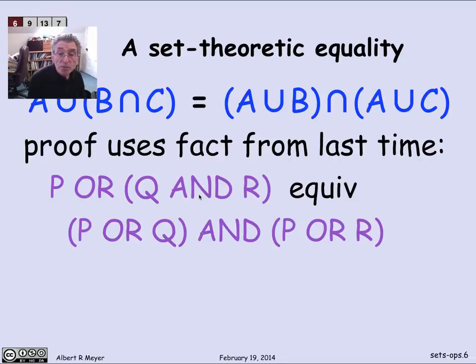That was a propositional equivalence that we proved in an earlier talk, namely that OR distributes over AND. So p or (q and r) is equivalent to (p or q) and (p or r). So you can see that this equivalence in purple has the same structure as the set theoretic equality in blue, except that union's replaced by OR and intersection's replaced by AND, and set variables a, b, c are replaced by propositional variables p, q, r.